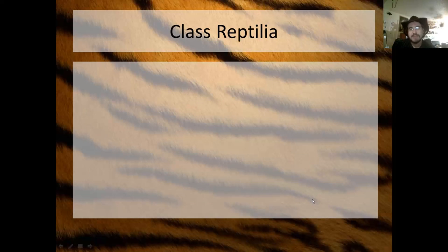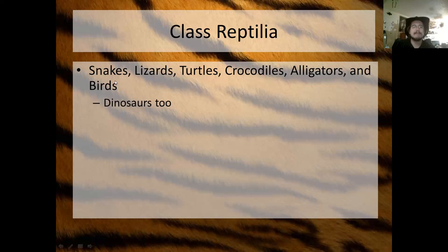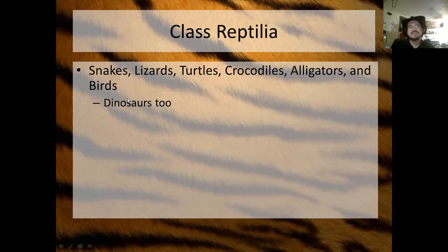Class Reptilia is a great example of an amniote. They are snakes, lizards, turtles, crocodiles, alligators, and birds. Even dinosaurs can be thrown in as Reptilia, even though there are large differences between dinosaurs and the reptiles we think of now.